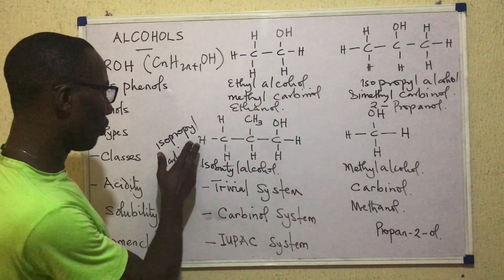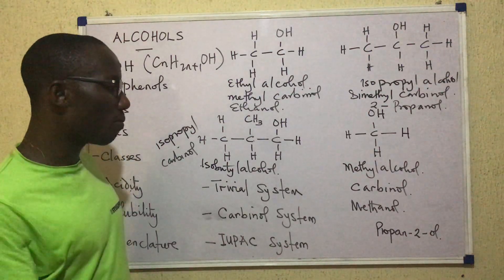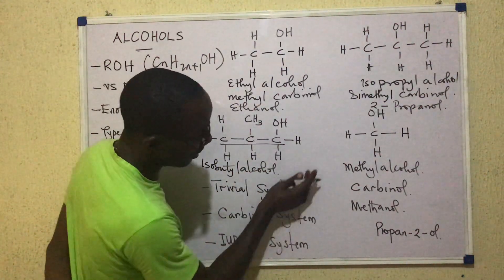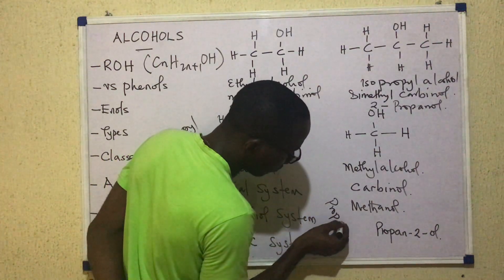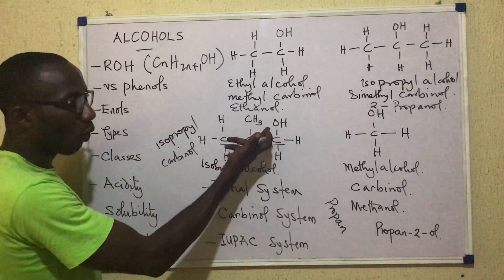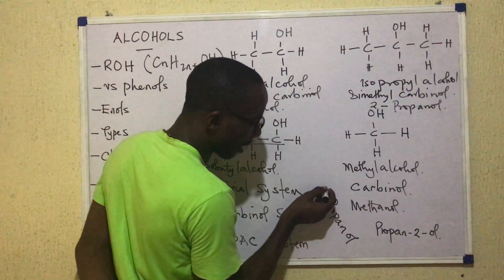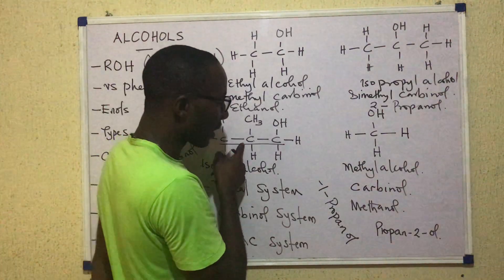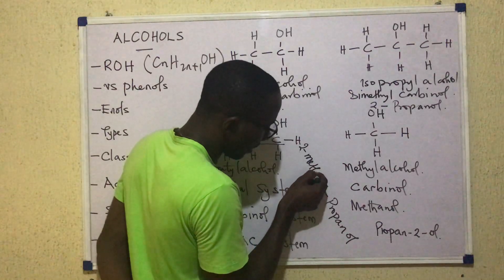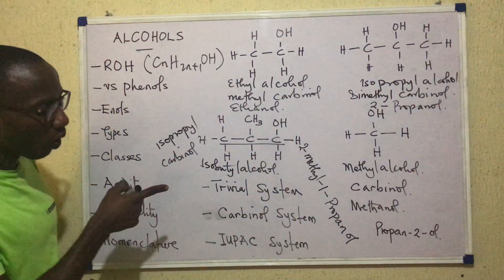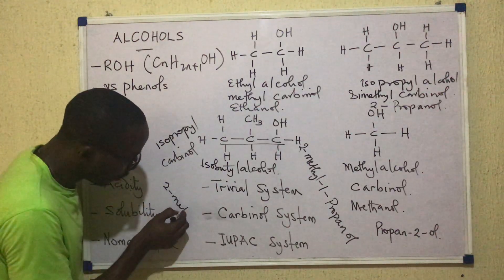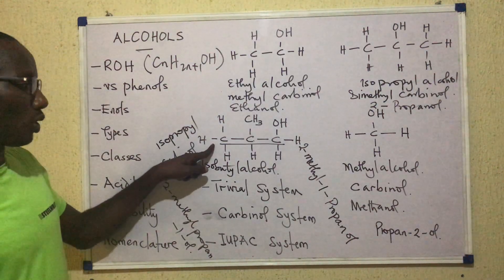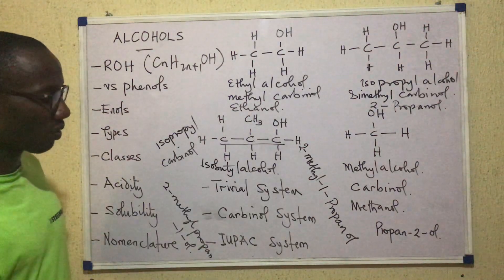We haven't named the last compound by the IUPAC system yet. The longest continuous chain has three carbons, so we write propan. There's an OH group, making it propan-ol, and that OH is on carbon-1, giving 1-propanol. But on that three-carbon chain, there's a methyl group as a branch on carbon-2. So we add 2-methyl, giving the name 2-methyl-1-propanol, which can also be written as 2-methylpropan-1-ol.